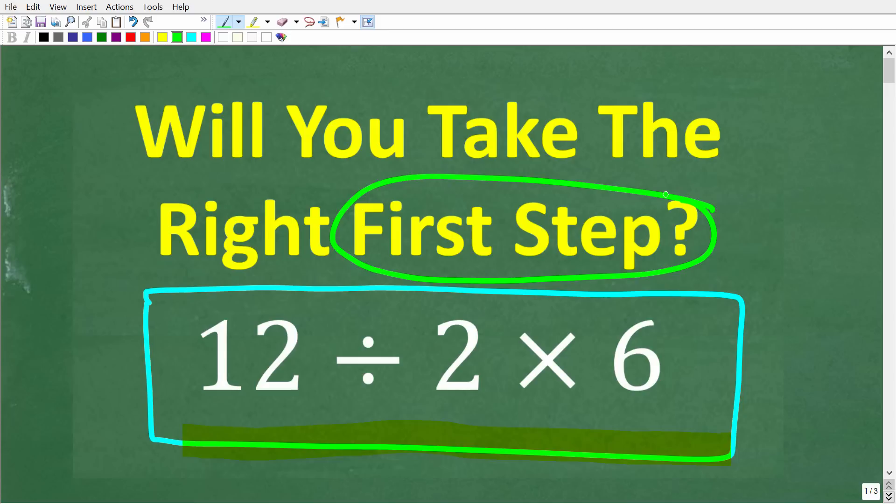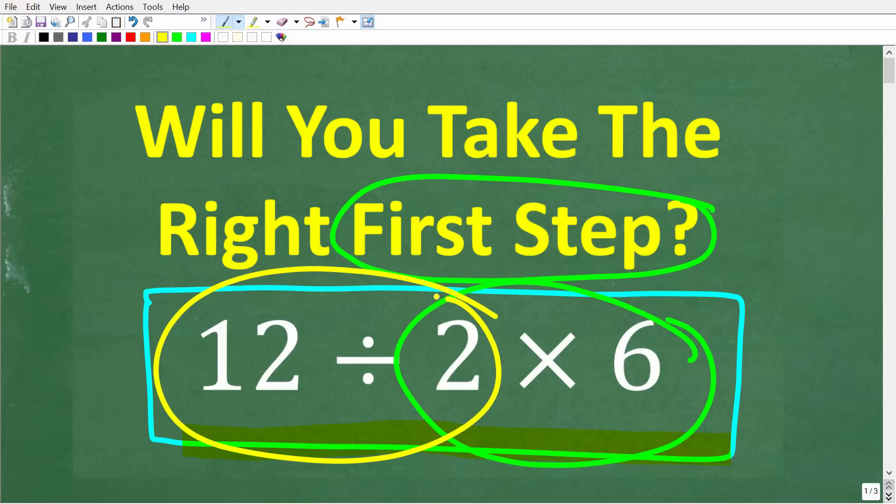Because we can only do two things here right, so we can either multiply first or we can do division first. So what should we do? Put in your answer into the comment section and tell me what your first step was and why you took it.